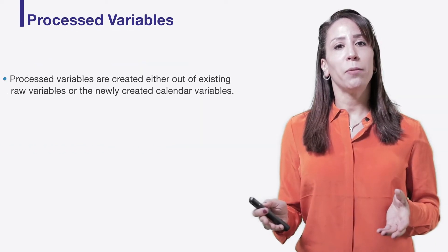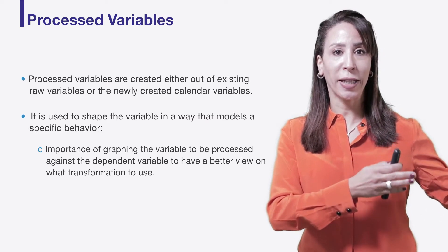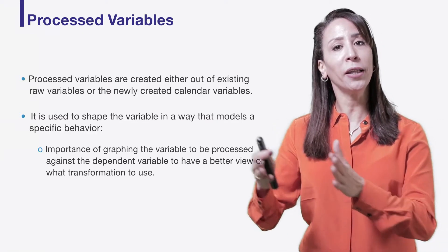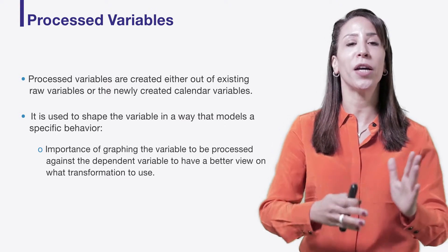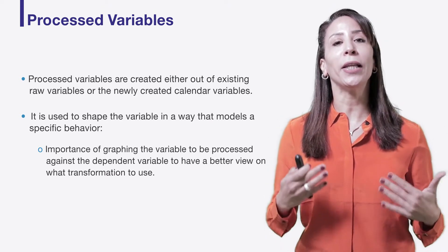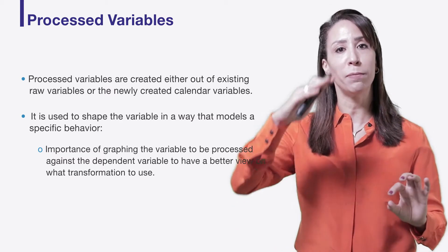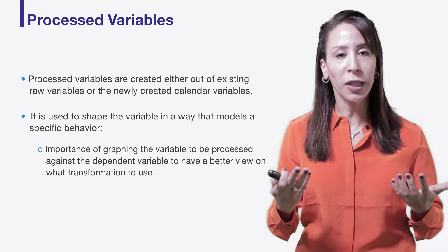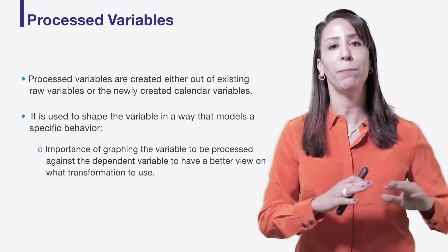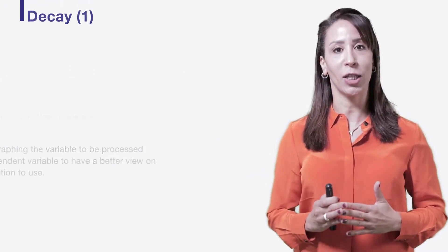Processed variables are created either from the raw variables collected during the kickoff meeting and data request, or from the calendar variables described earlier, to which you then apply another transformation. Before creating any processed variable, I strongly encourage you to graph the raw variable against the dependent variable. Based on what you see, you choose a transformation adapted to your raw variable that will create the shape you need for modeling.